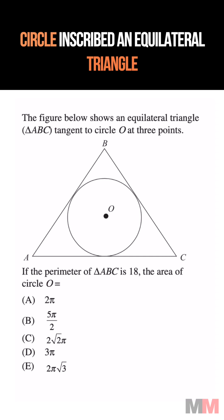We got an equilateral triangle tangent to a circle at three points. The perimeter of triangle ABC is 18. Find the area of that circle.